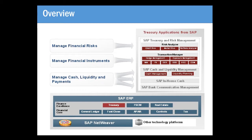SAP TRM is used to manage financial instruments and to manage financial risks associated with financial transactions. The central component within SAP TRM is the transaction manager, which provides the instruments for processing financial transactions from capturing the deal through to posting data to financial accounting.